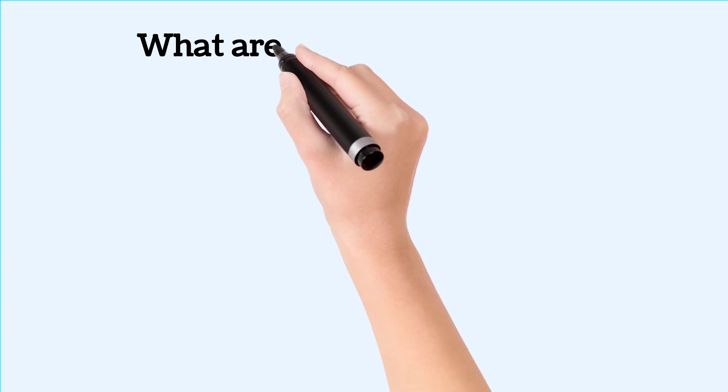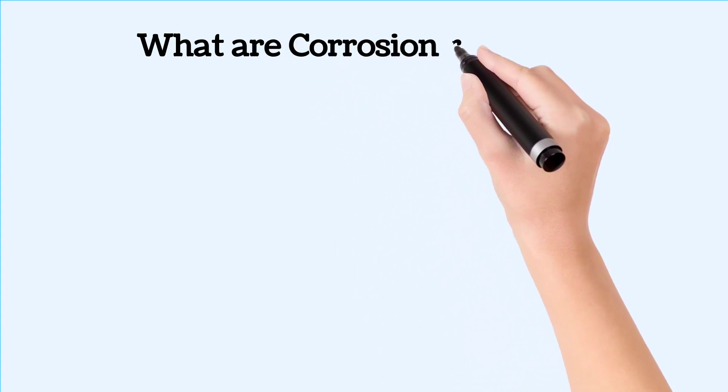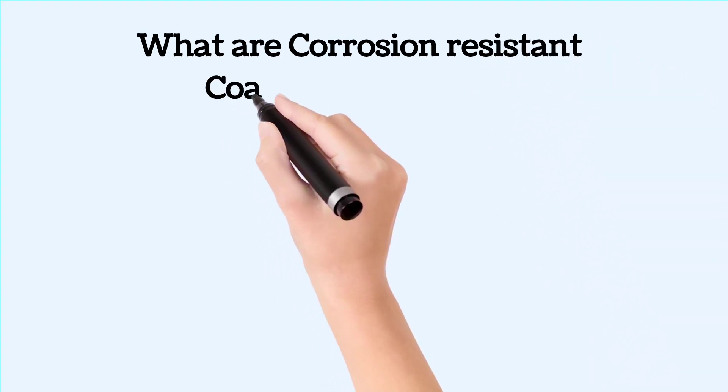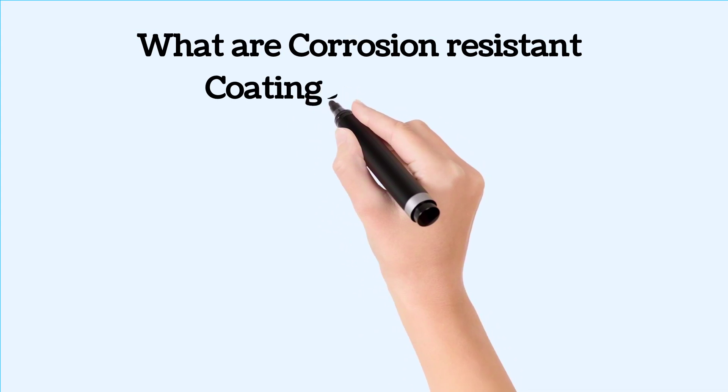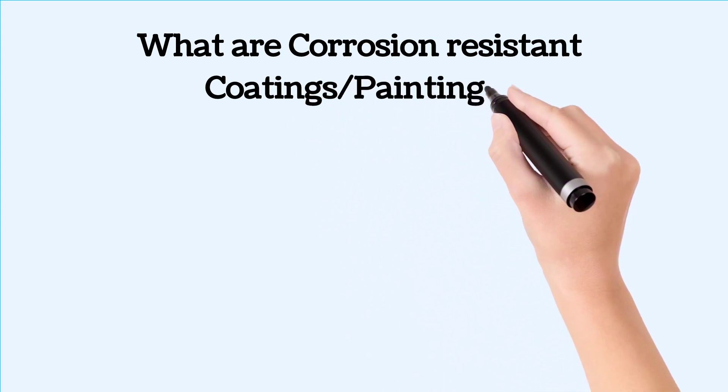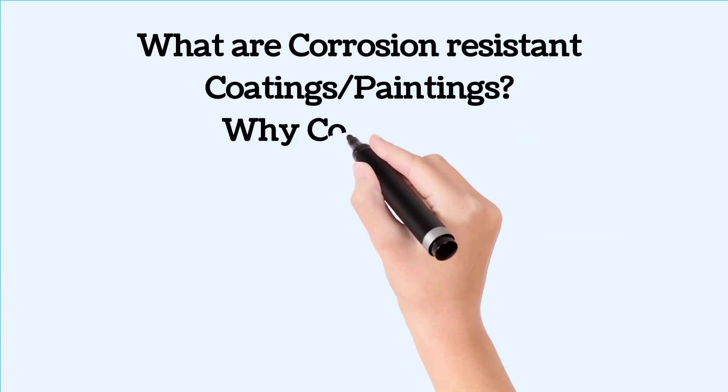In this video we will discuss corrosion resistant parameters known as coatings or paintings. We will discuss what coating actually is. We will discuss stainless steels and if stainless steels corrode, do we apply coatings on stainless steels. We will also shed light on best cost-effective coatings for corrosion prevention.